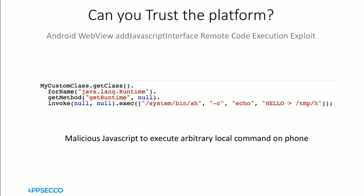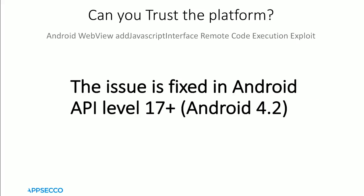This is an example where even platform trust can be broken. But because of Android's sandboxing mechanism, the impact a potential attacker can do is limited to that particular app. This issue was fixed in Android API level 17 onwards - they made it more secure by requiring you to explicitly annotate which methods are exposed. By default, the methods will not be available to the JavaScript interface.